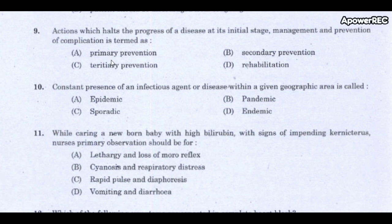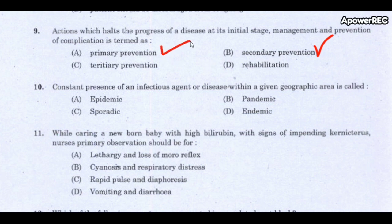Next question: actions which halt the progress of a disease at its initial stage, including management and prevention of complications, are termed secondary prevention. In primary prevention, we prevent before there is any evidence of disease. Tertiary prevention refers to actions taken to prevent and delay the development of acute or chronic complications, especially cancer.